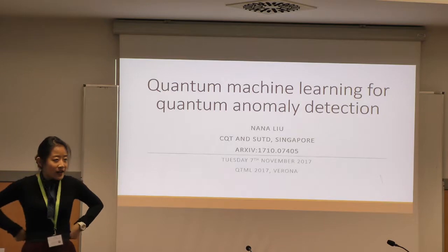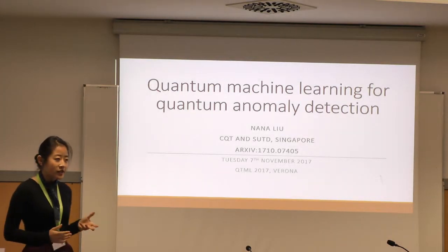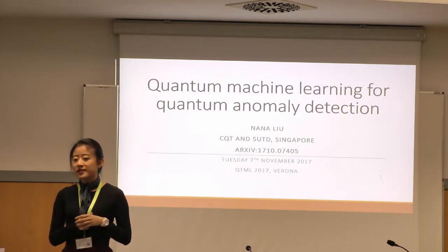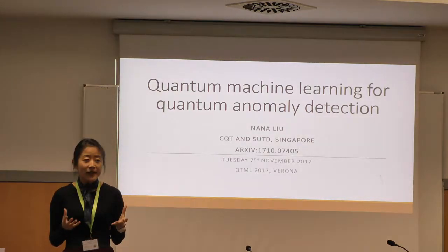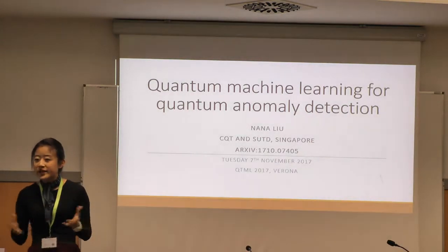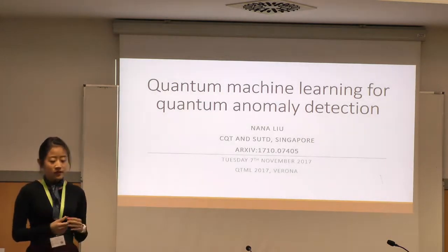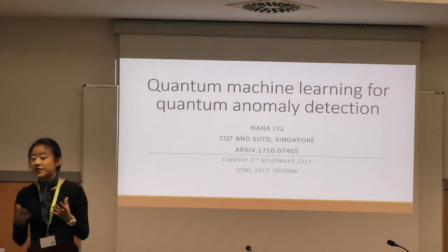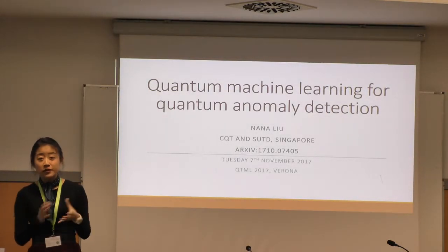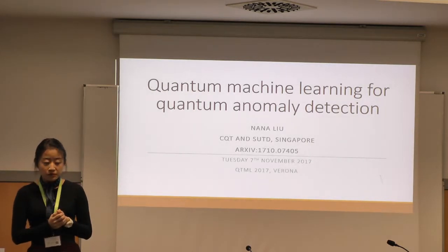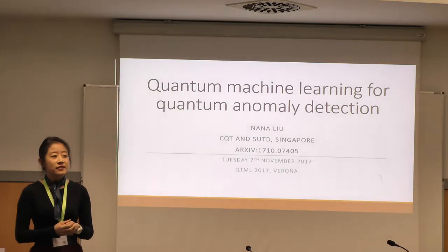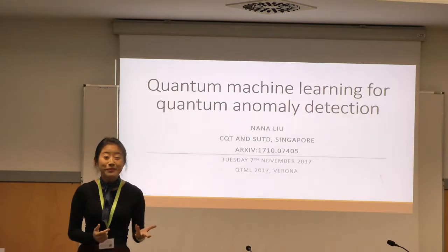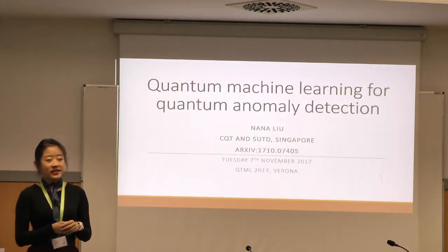What do I mean by Chrono Anomaly Detection? Anomaly detection are algorithms whereby we look for unusual patterns in otherwise expected or normal data. It has a wide range of applications ranging from fraud detection — looking for unusual spending patterns on credit cards which can indicate fraud or an intruder in your system — to fault detection in critical systems like aircraft engines or nuclear power plants, and intrusion detection in the context of cyber security.